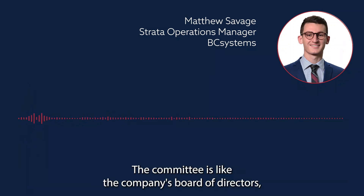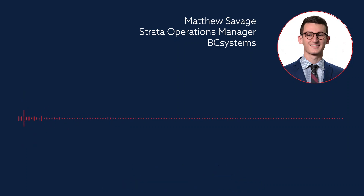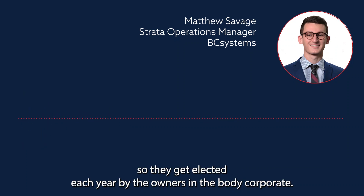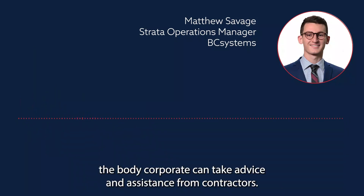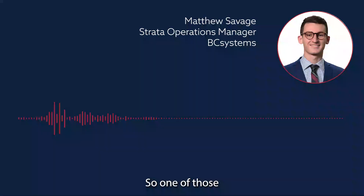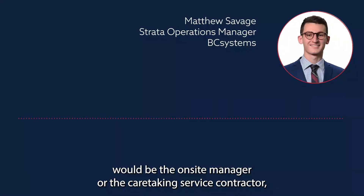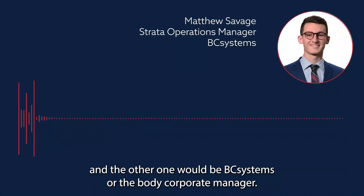The committee is like the company's board of directors, so they get elected each year by the owners in the body corporate. Separate from the body corporate, the body corporate can take advice and assistance from contractors — one of those would be the on-site manager or caretaking service contractor, and the other would be VC Systems or the body corporate manager.